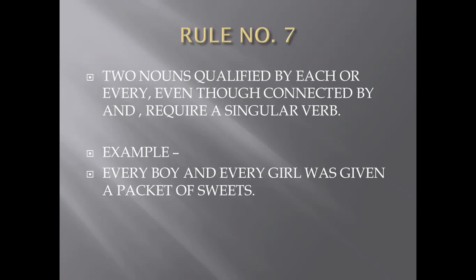Rule number seven says: two nouns qualified by 'each' or 'every', even though connected by 'and', require a singular verb. If 'each' or 'every' is placed before the nouns, even if they are connected by 'and', a singular verb is used. Example: 'Every boy and every girl was given a packet of sweets.' Both nouns are qualified by 'every', so the singular verb 'was' is used.